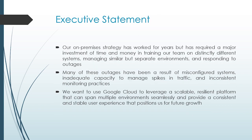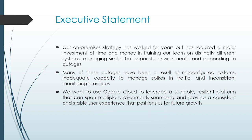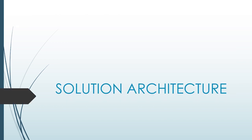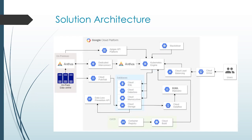The executive statement says their on-premises strategy has worked for years but required major investment of time and money in training, managing similar but separate environments, and responding to outages. Many outages resulted from misconfigured systems, inadequate capacity to manage spikes in traffic, and inconsistent monitoring practices. They want to use Google Cloud to leverage a scalable, resilient platform that can span multiple environments seamlessly and provide a consistent, stable user experience that positions them for future growth. We need to tackle all these issues.